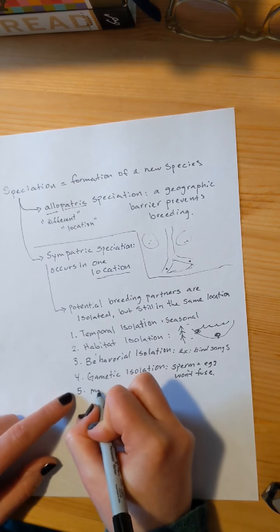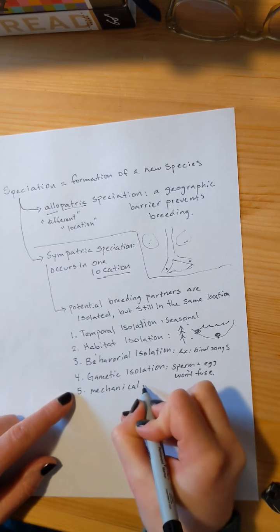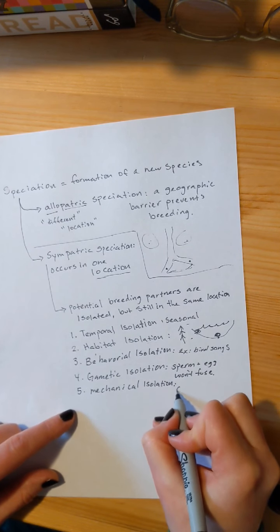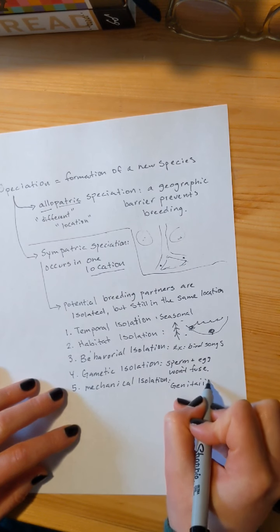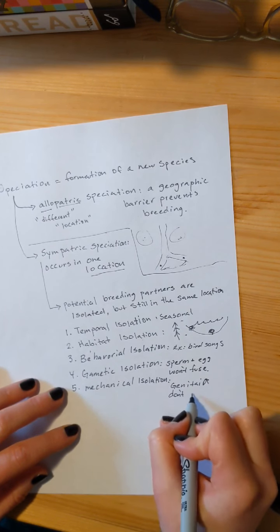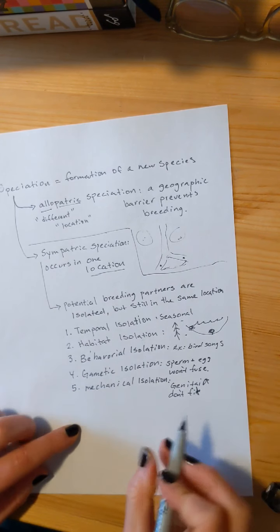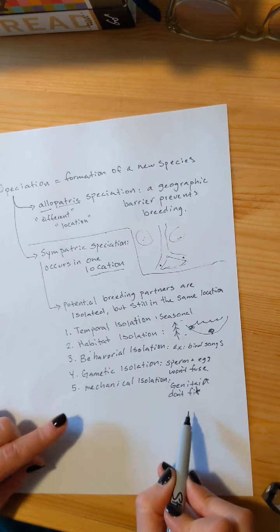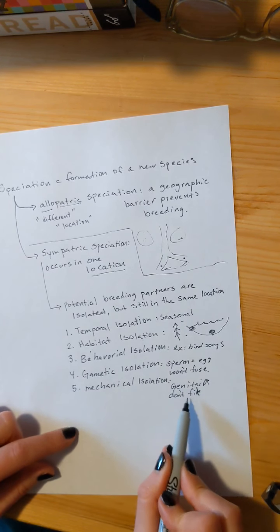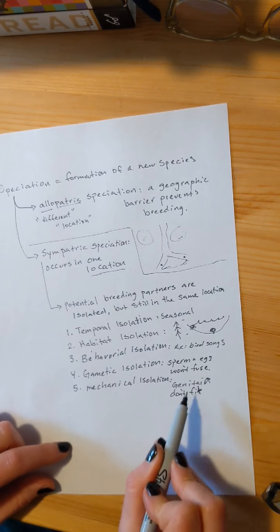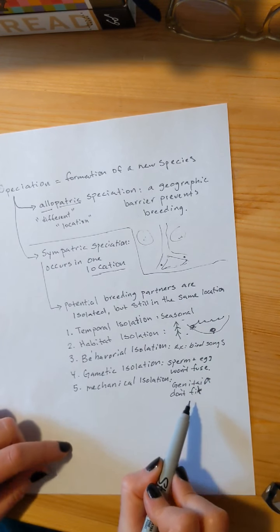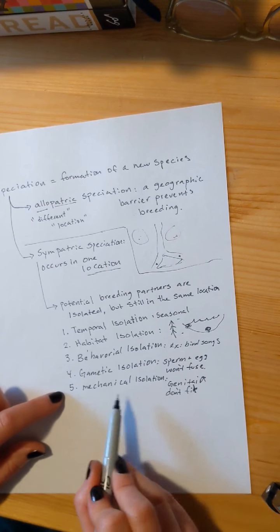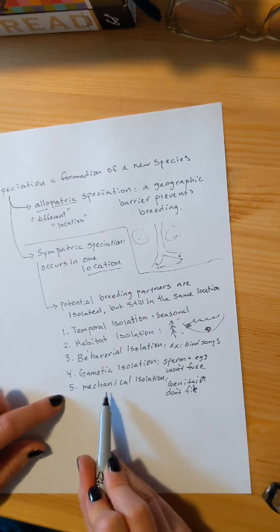And then lastly, you have mechanical isolation. This is when the genitalia just don't fit. For example, bugs have really odd shaped genitalia, and they have to perfectly fit together like a lock and a key, and if they don't perfectly fit together, there will not be any chance for the sperm to meet the ova. Another example that we like to use is, think about a Great Dane and a Chihuahua. The genitalia do not fit. That would be mechanical isolation.